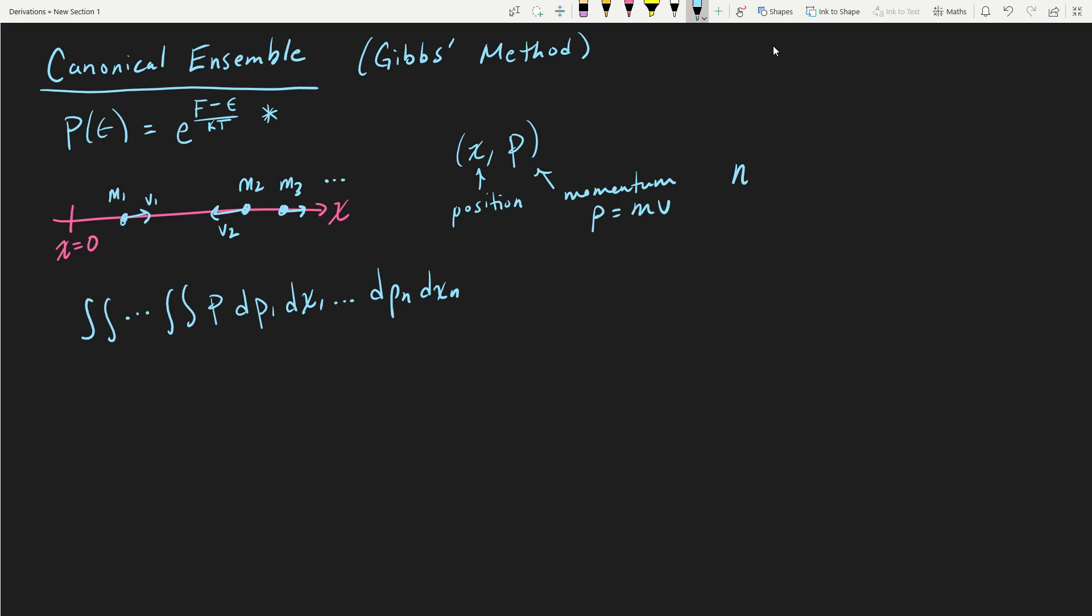The first thing we notice is that a probability distribution when integrated over all the components is just going to be one. This is going to turn out to be quite a useful fact. What we learn is that in the most general case, P must be a function of x1, p1 all the way up to xn, pn.